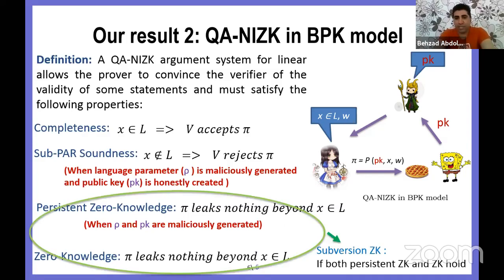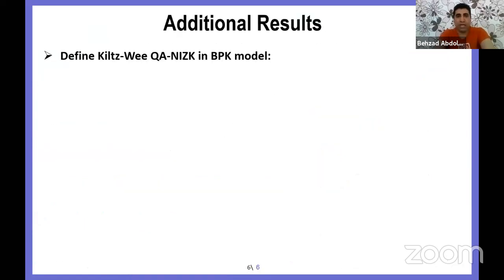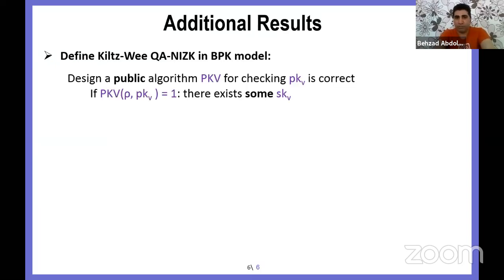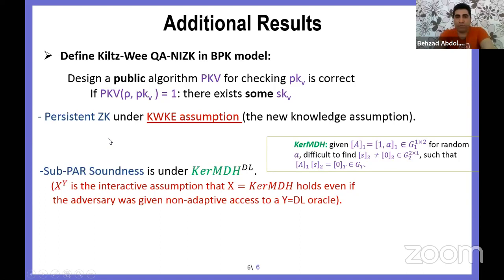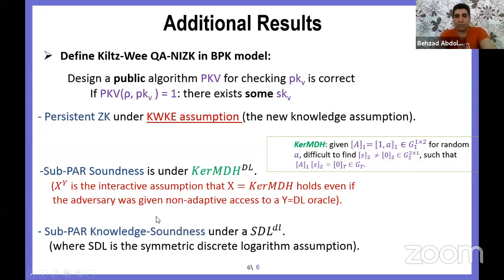We define QA-NIZK in the BPK model with: completeness; a new notion called subversion parameter soundness (soundness holds even if lpar is maliciously generated, public key is honestly generated); and persistent ZK (ZK holds even if lpar or public key are maliciously generated). We prove persistent ZK under a new assumption called TXVKE (a knowledge assumption) and subversion parameter soundness under a variant of MDDH, plus a stronger subversion parameter knowledge soundness under a variant of SDL.